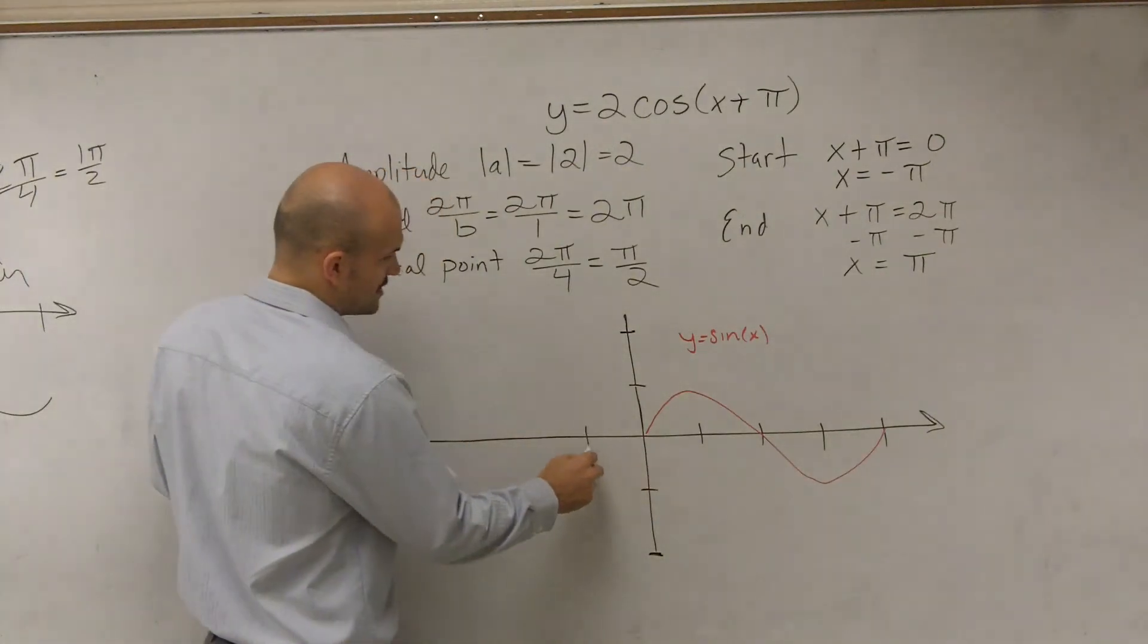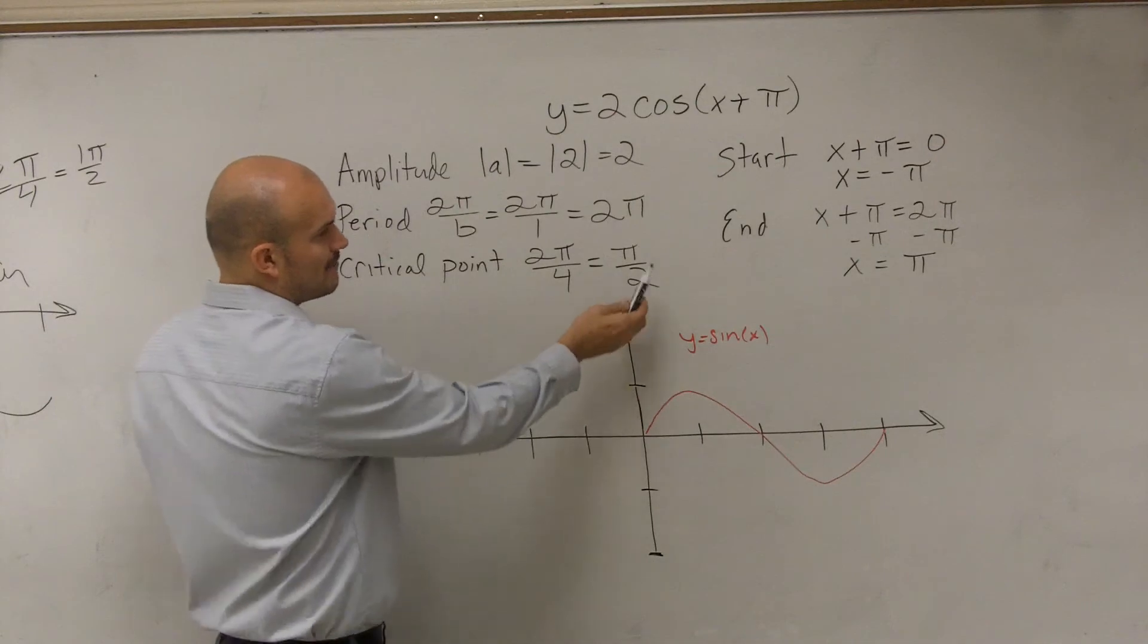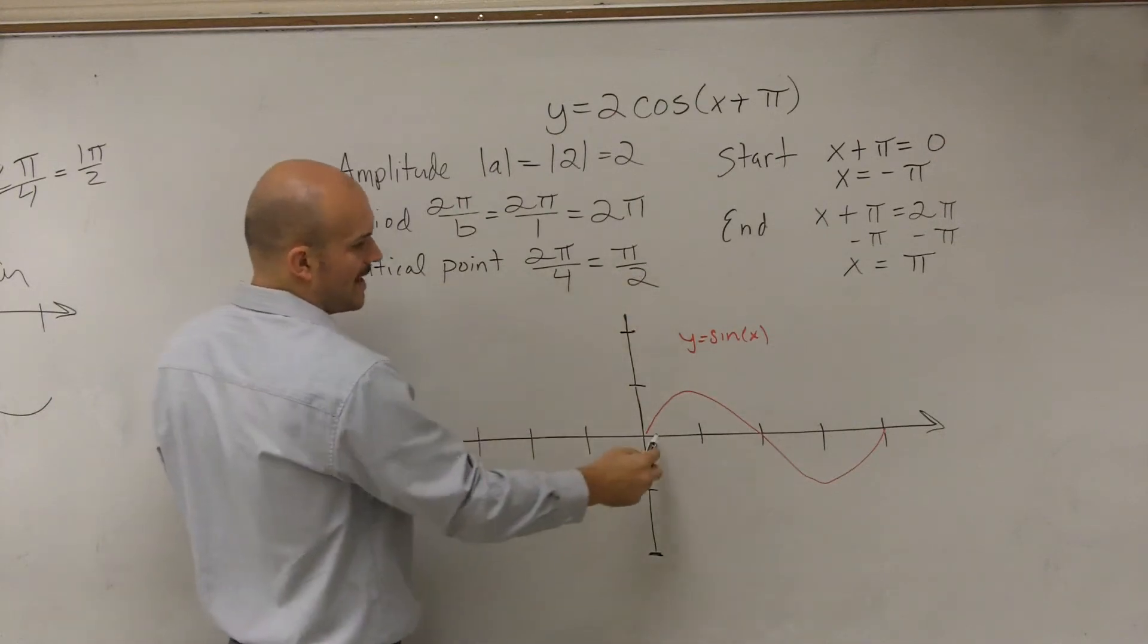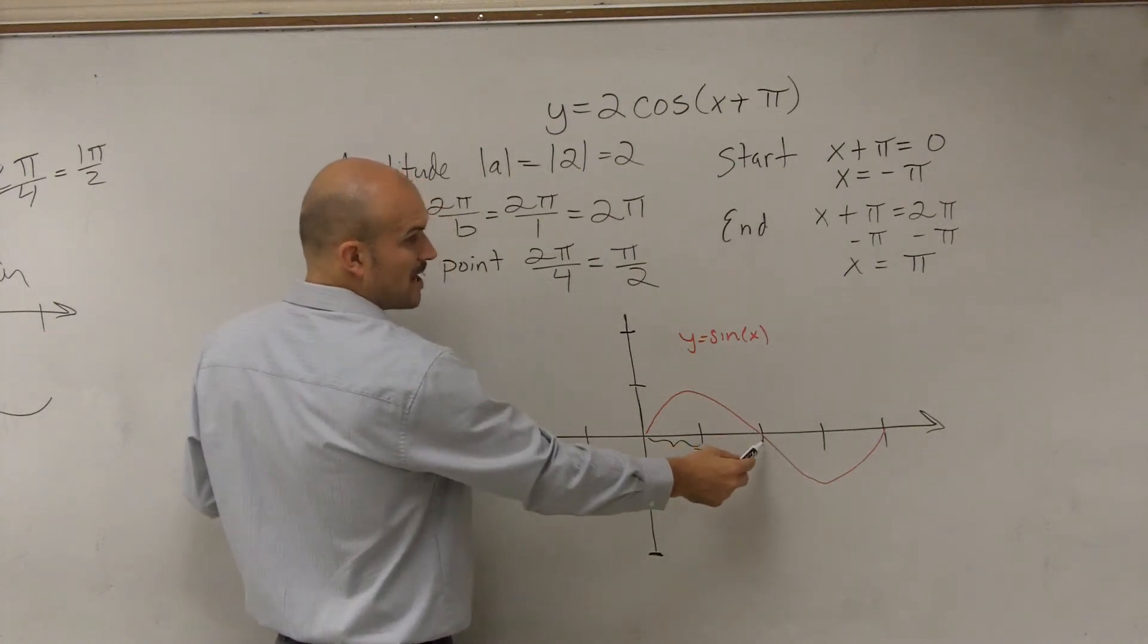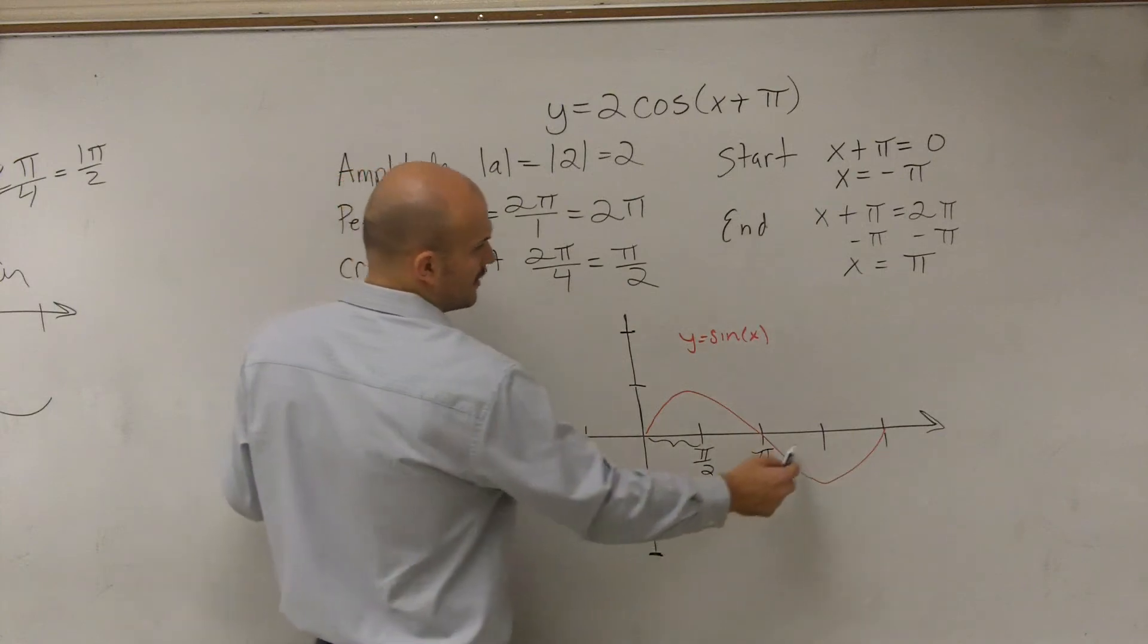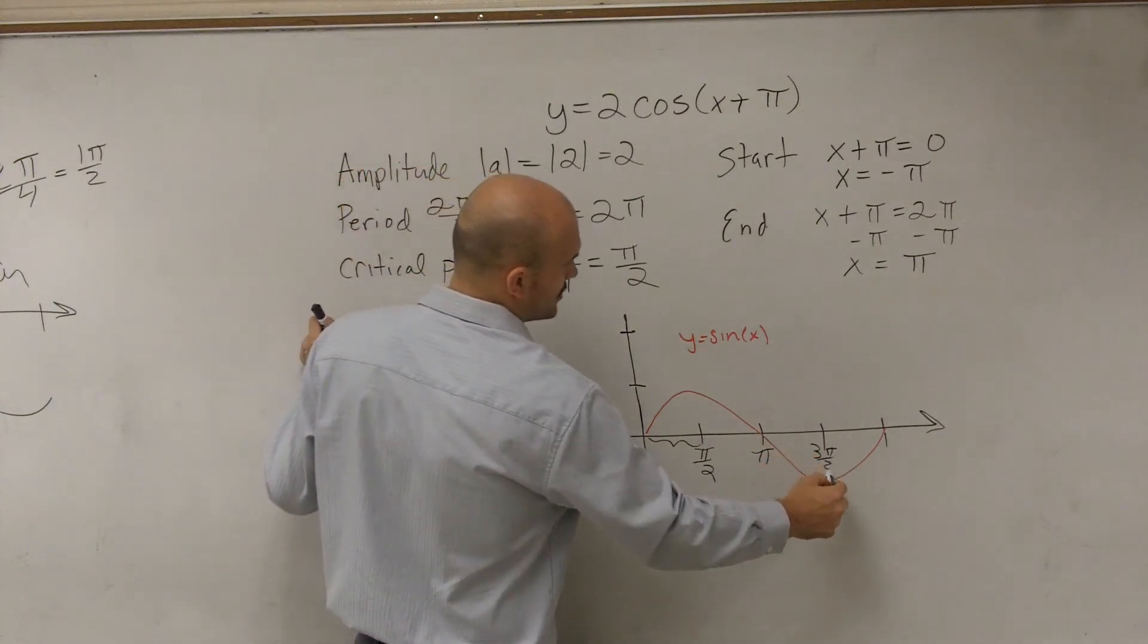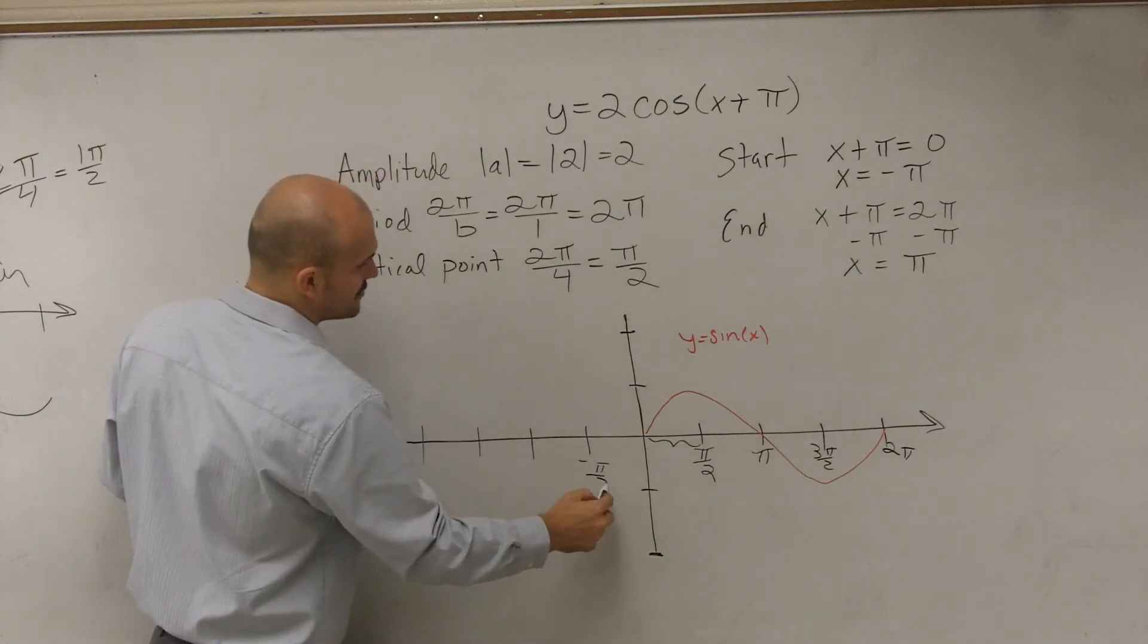So if you remember these points that we've talked about. If my distance between my critical points is π/2, that means from here to here is π/2. From here to here is π/2. But π/2 plus π/2 is π. Then this would be 3π/2. And this would be 2π. And we can do this in the negative direction as well.